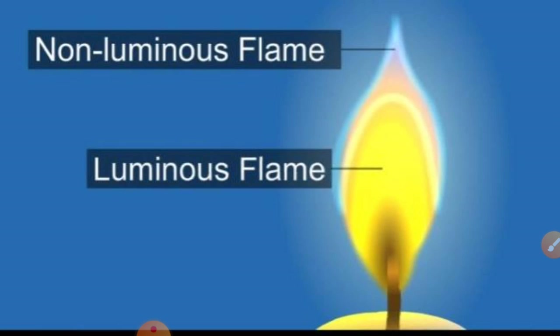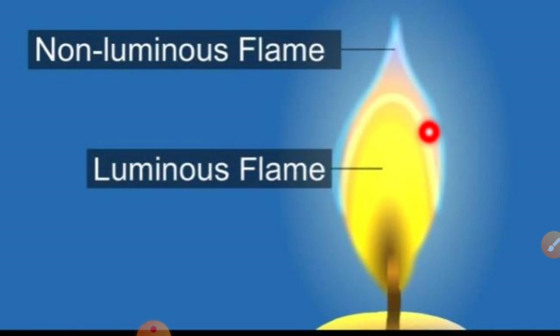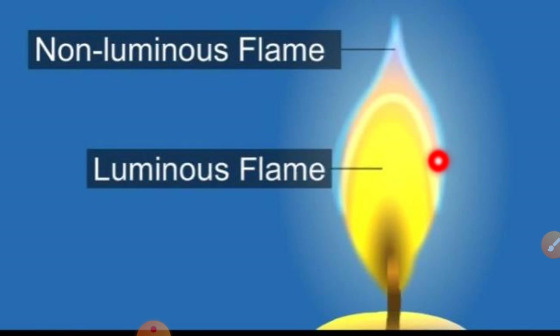What is a flame? A flame is a hot glowing body of ignited gas which is produced when something is on fire. Some materials burn with a flame and some do not. Now we will look at luminous flame and non-luminous flame.